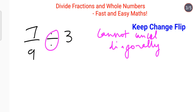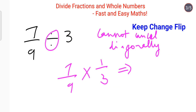Instead, follow the same KCF logic: keep the first fraction as 7 upon 9, change the division to multiplication, and flip 3 to 1 upon 3. This gives you 7 into 1 which is 7, and 9 into 3 which is 27 — so the answer is 7 upon 27.